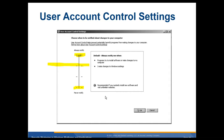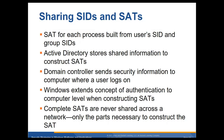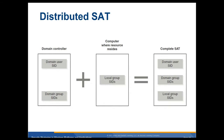Sharing SIDs and SATs — security access tokens for each process are built from the user SID and group SIDs. Active Directory stores shared information to construct the security access tokens. Domain controllers send security information to the computer where the user logs on. Windows extends authentication to the computer level when constructing security access tokens. Complete SATs are never shared across the network — only the parts necessary to construct the SAT. The domain controller has the domain user SID and domain group SID; on the local machine you have the local group SID, and they're put together to form the complete SAT. No one place has the full SAT until it's assembled at the local computer.